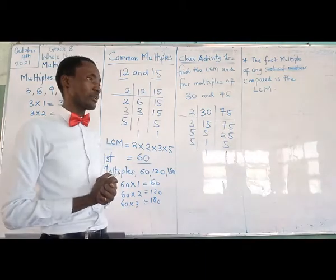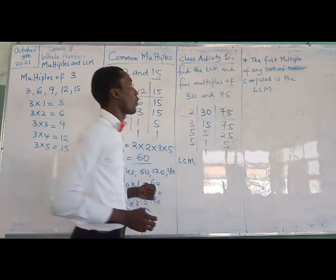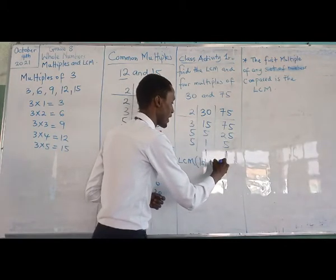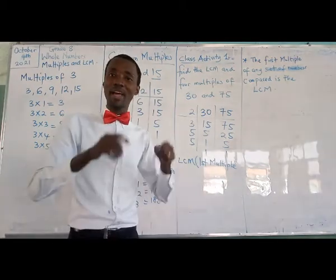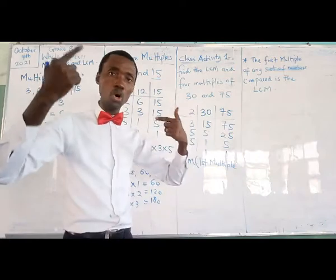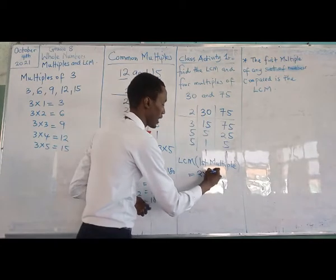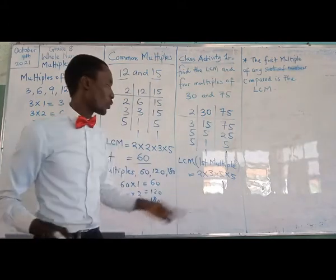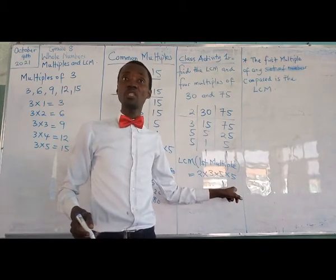The next thing I'm going to do is write my LCM — or first multiple. I'll write LCM (first multiple) so your brain saves it and knows that any time I have LCM, it is my first multiple. That gives you 2 times 3 times 5 times 5. What is 2 times 3? That is 6. 6 times 5 gives you 30. 30 times 5 gives you 150. So the LCM is 150.